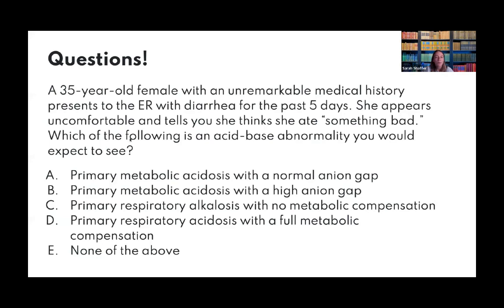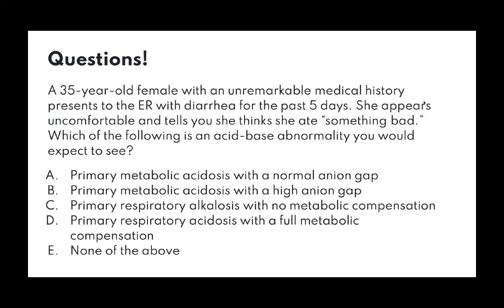Practice question 1: A 35-year-old female presents with diarrhea for five days. Which acid-base issue would you expect? The answer is A — normal anion gap metabolic acidosis. The most common cause of normal anion gap metabolic acidosis is diarrhea, because you lose the bicarb-rich intestinal juices, causing the body to become more acidotic.